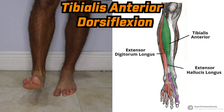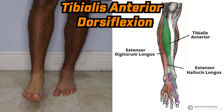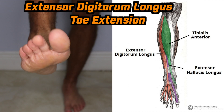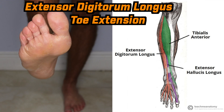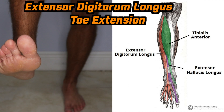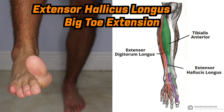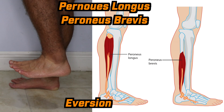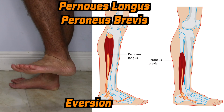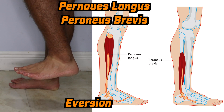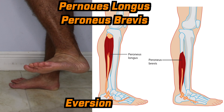Moving on to the anterior compartment, you're going to have your tibialis anterior, which is mainly responsible for dorsiflexion. You're also going to have your extensor digitorum longus, which is responsible for extending your toes, and your extensor hallucis longus, which is responsible for extending your big toe. The last compartment is the lateral compartment, which is where you're going to have your peroneus longus and brevis, which are mainly responsible for eversion.